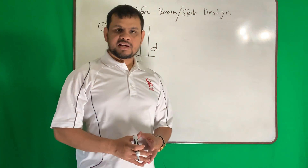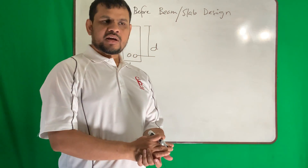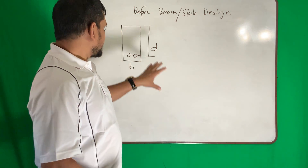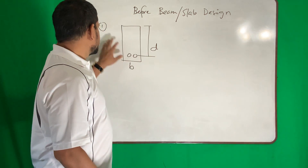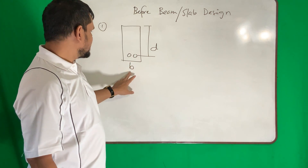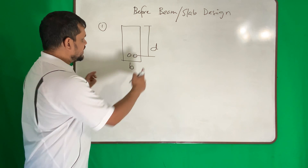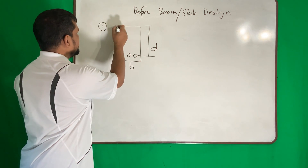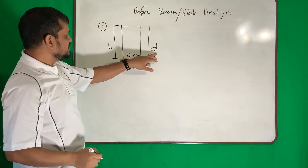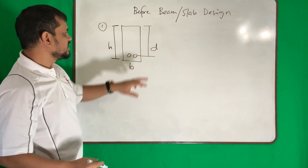This time I will discuss some basic knowledge required for beam or slab design. The first thing to know is the ratio between the depth and the width of a section. D is the depth from the centroid of the reinforcement to the compression face, and this portion is called H.